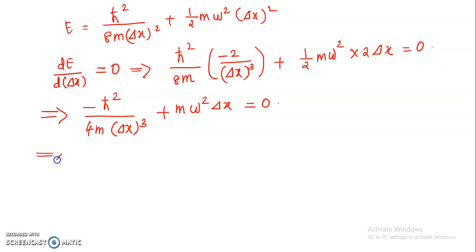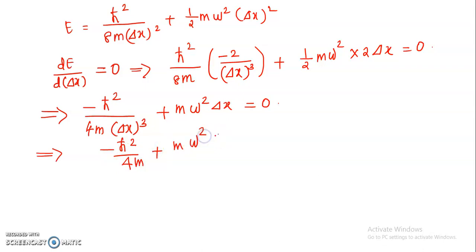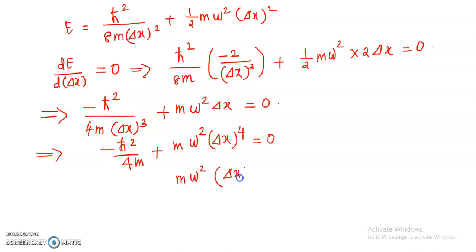Multiplying throughout by Δx³, we get −ħ² / 4m + mω²Δx⁴ = 0. So in this equation, mω²Δx⁴ = ħ² / 4m.